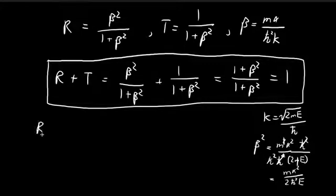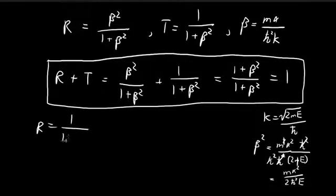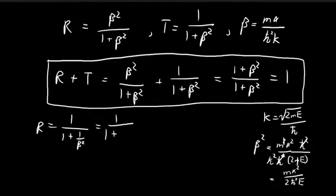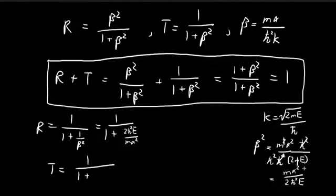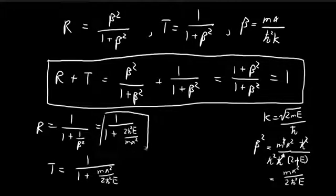We can substitute beta squared into our results. So r, instead of writing it as beta squared divided by 1 plus beta squared, we write it as 1 divided by 1 plus 1 over beta squared, which becomes 1 divided by 1 plus 2h-bar squared e over m alpha squared. And the transmission coefficient t equals 1 divided by 1 plus m alpha squared over 2h-bar squared e. So these are your reflection and transmission coefficients.